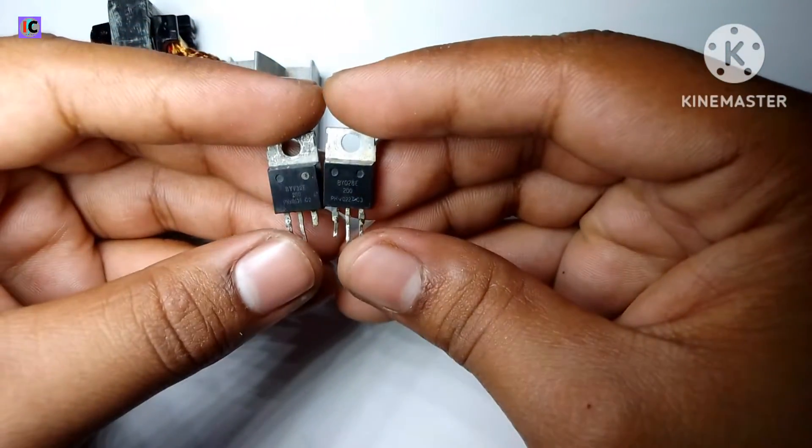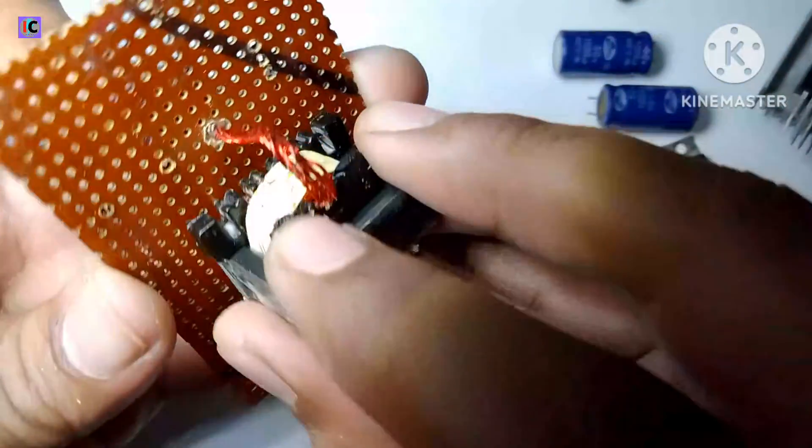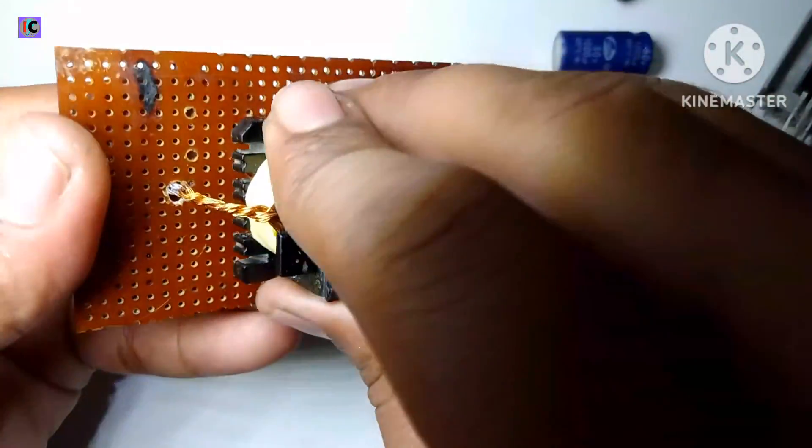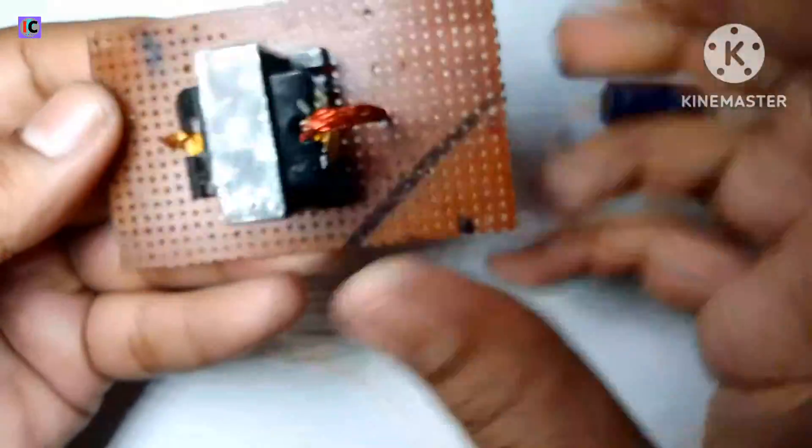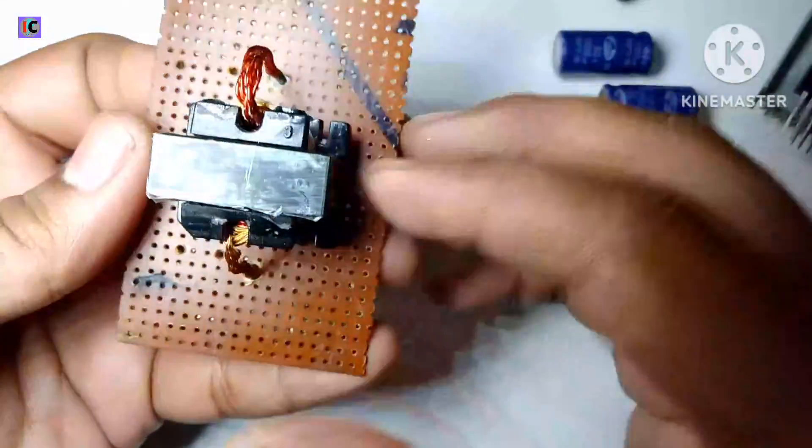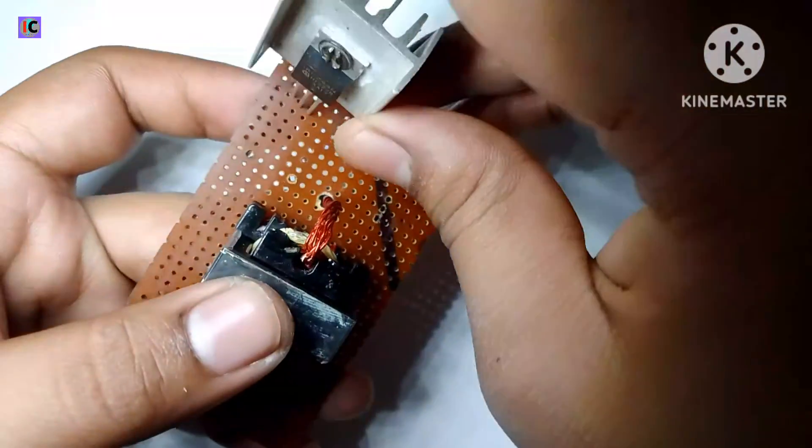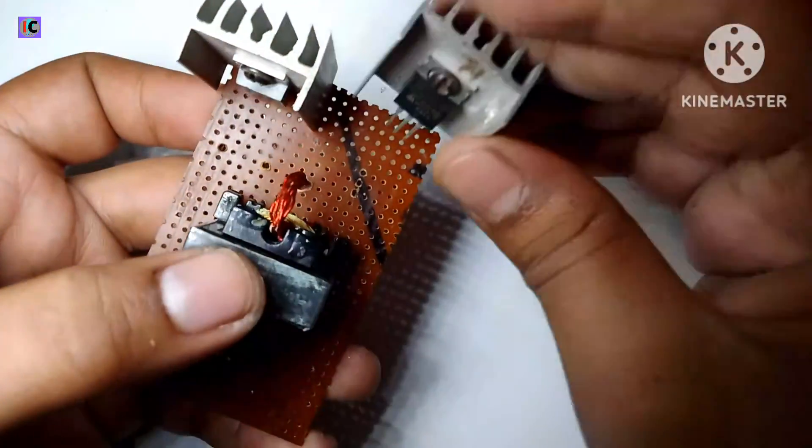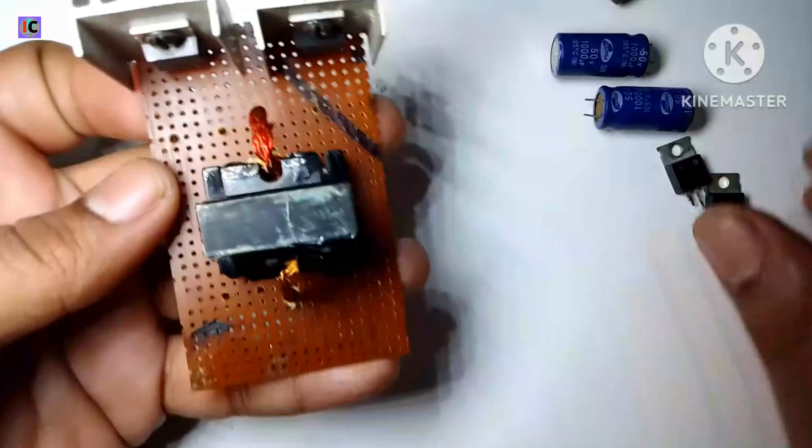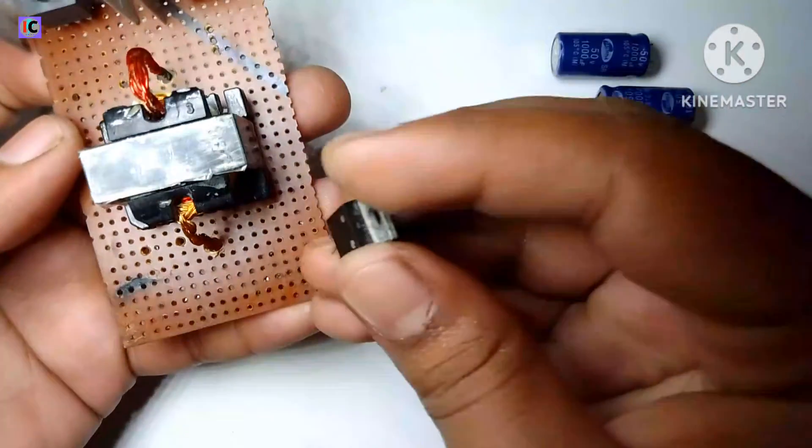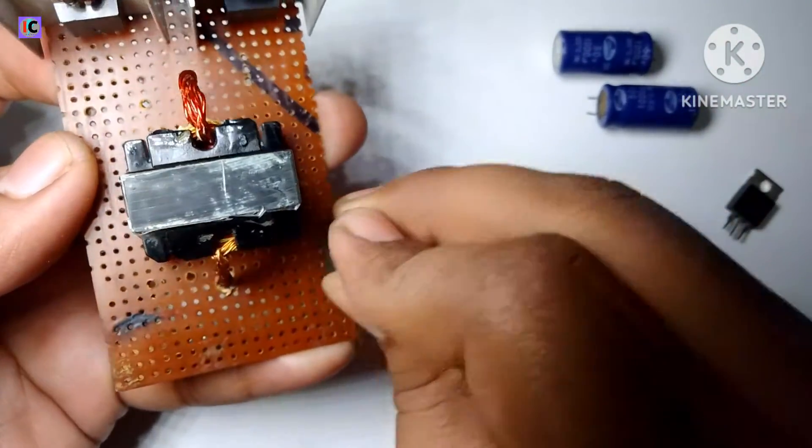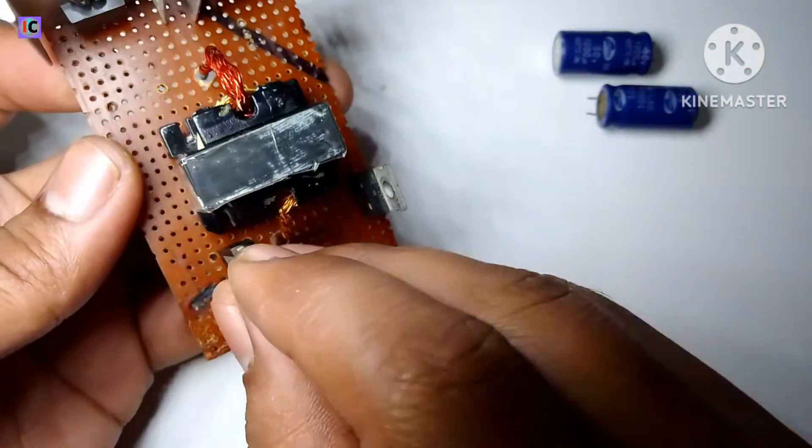This is the BY-28 Schottky diode, and it's a 200 volt Schottky diode. Here you can see I am mounting the MOSFETs, both MOSFETs on the zero PCB, and this is the Schottky diode which will connect at the output side.